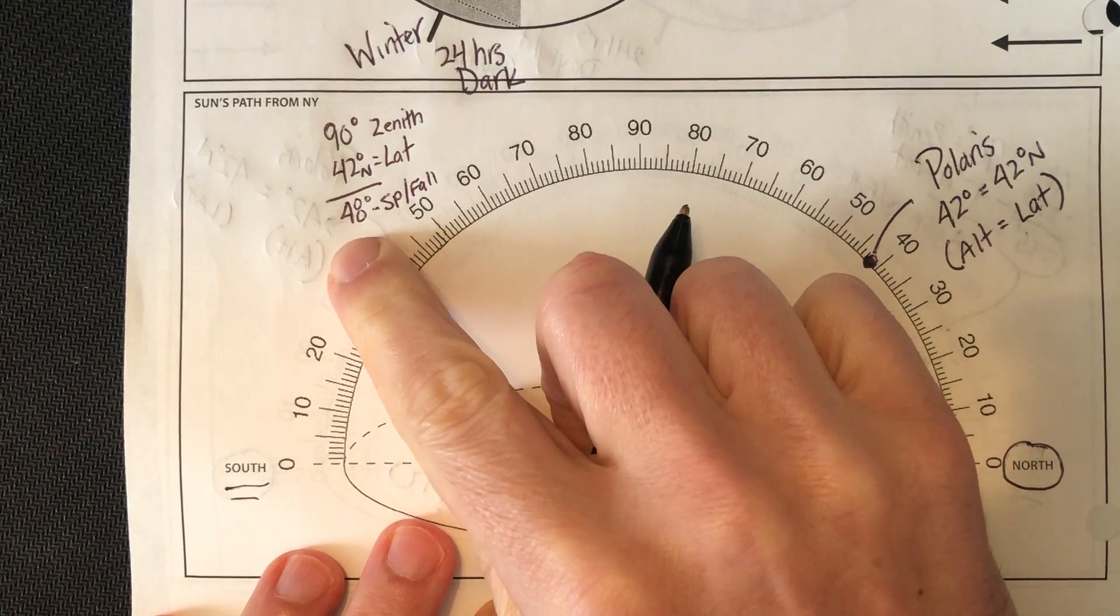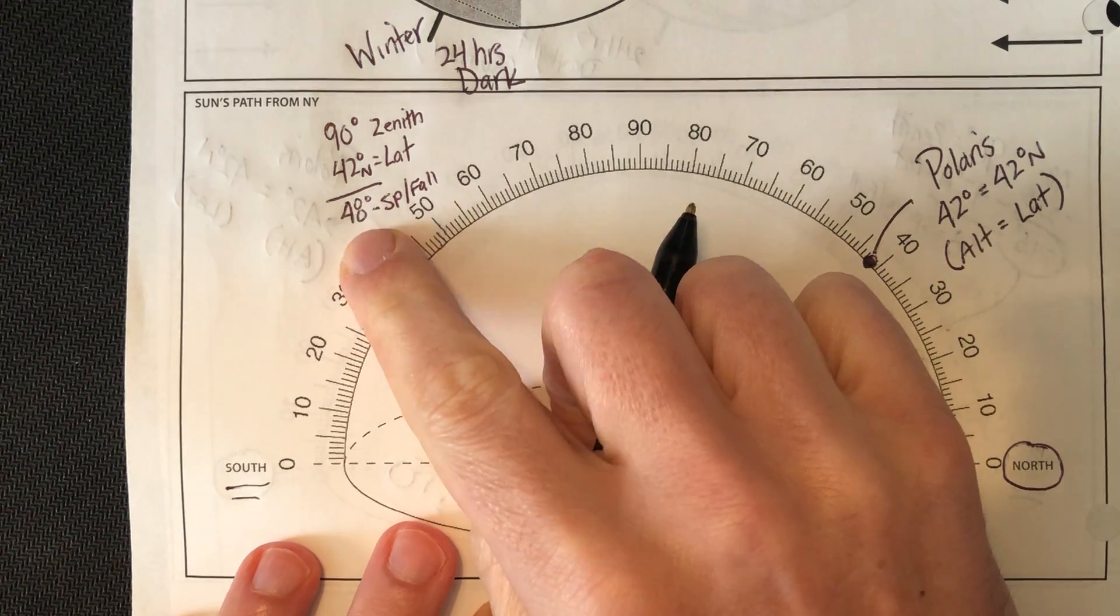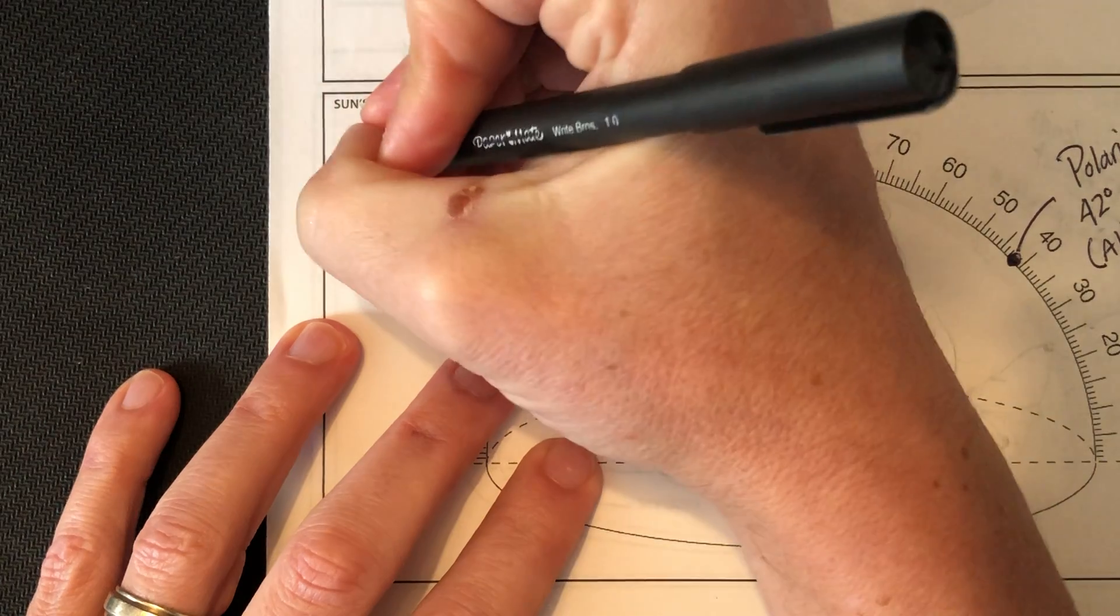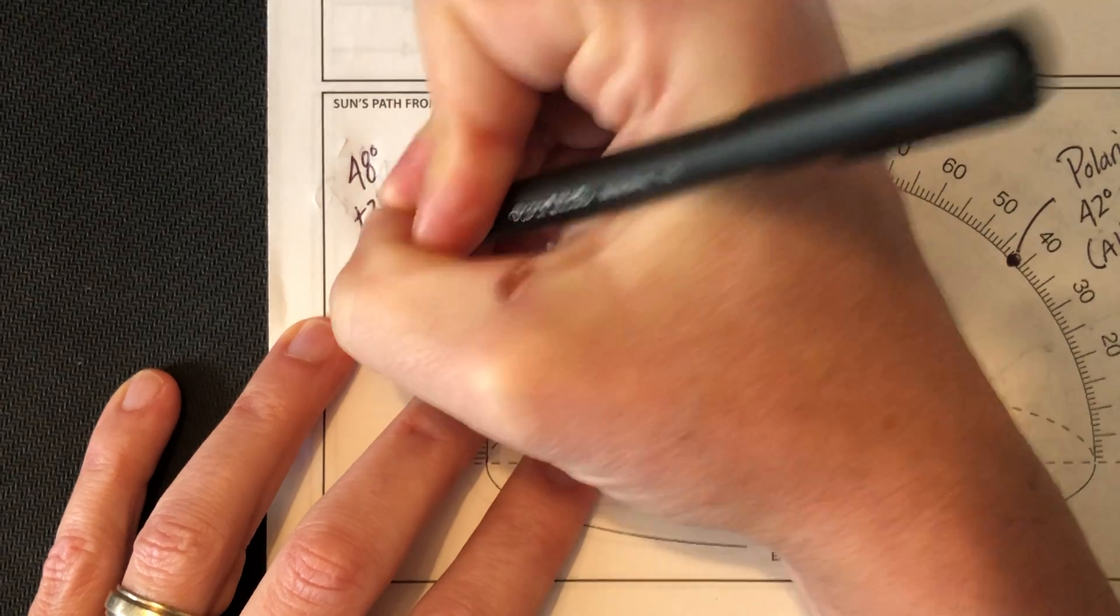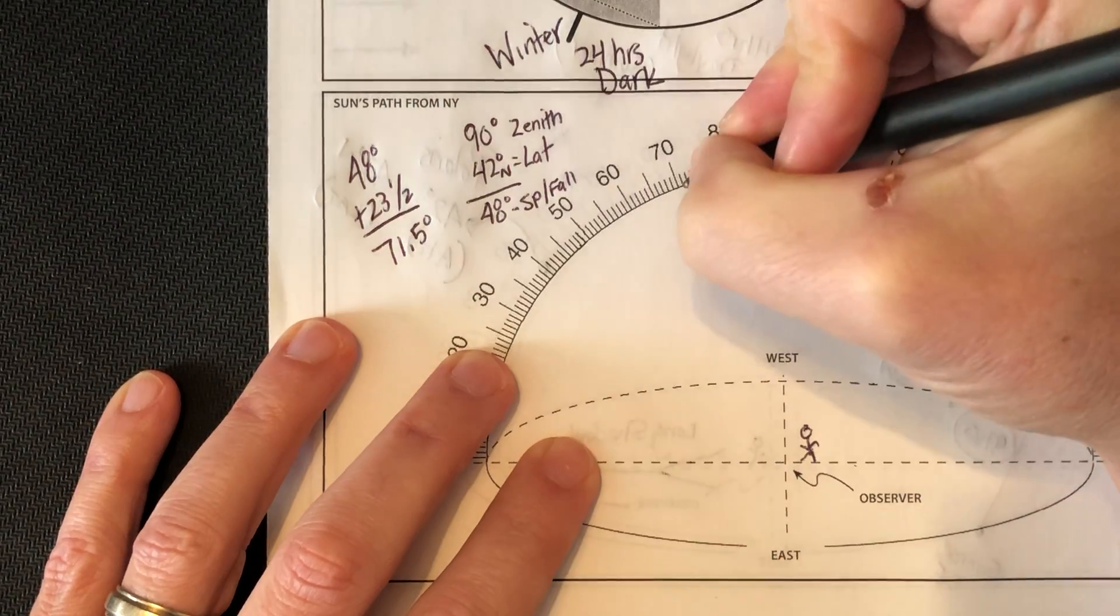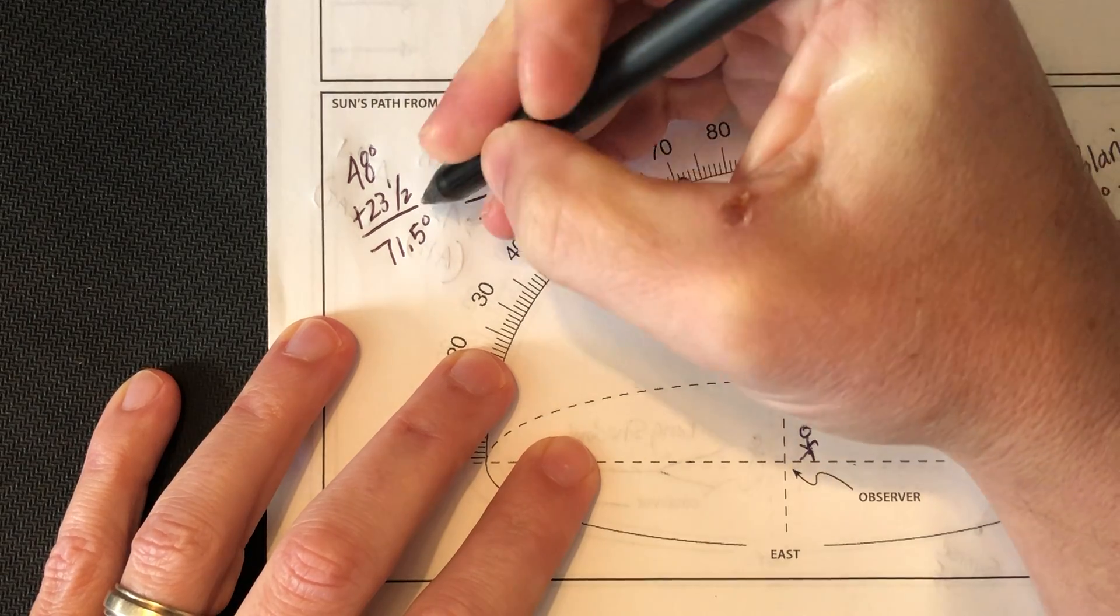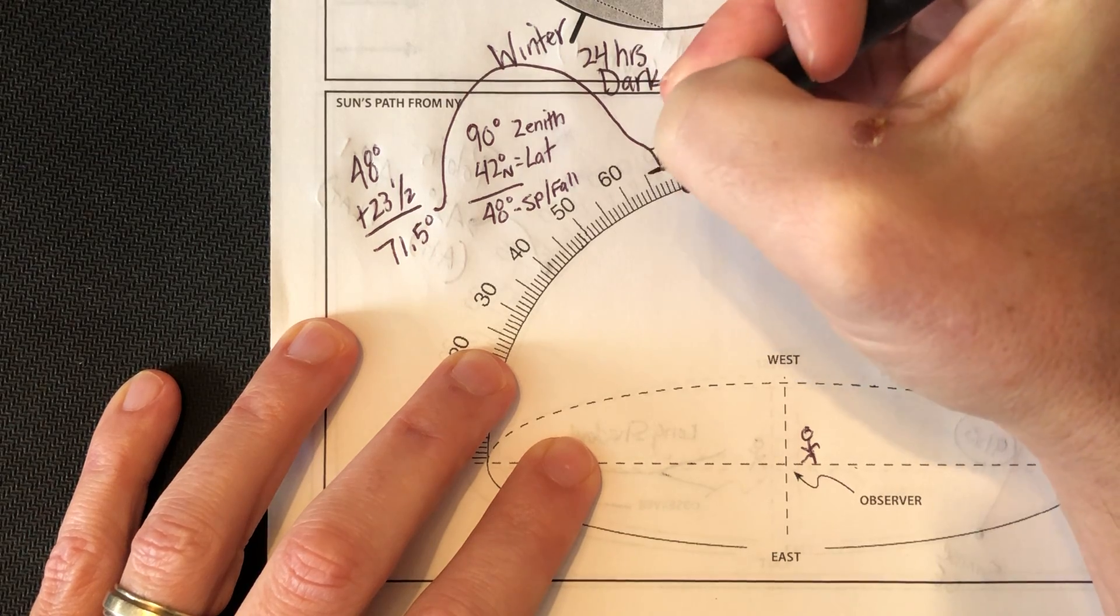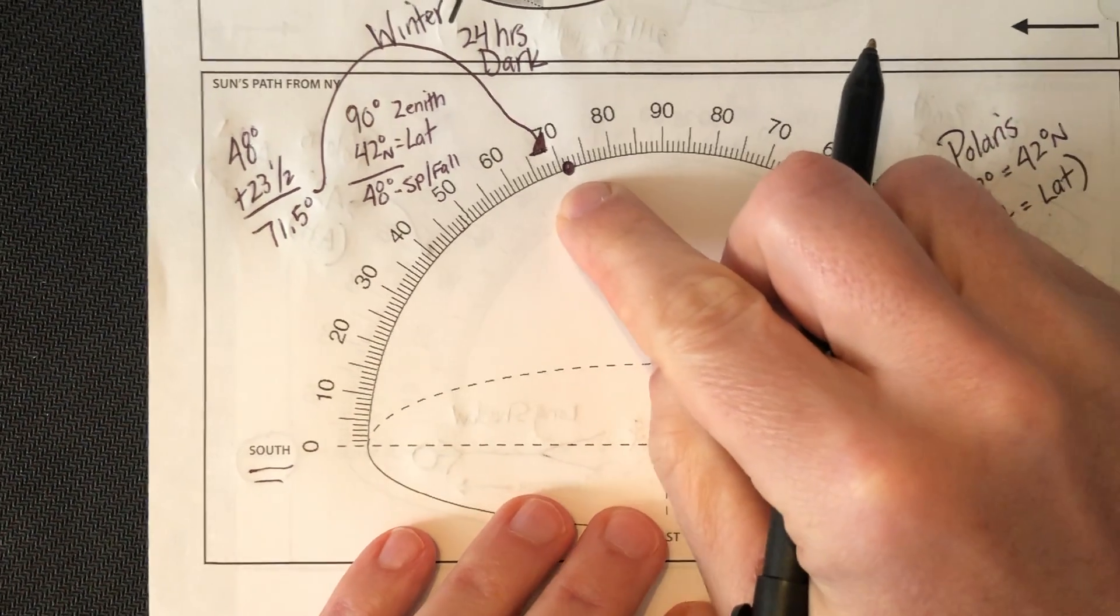Now, in winter, I subtracted the tilt of the axis. For summer, I'm going to add the tilt of the axis. So 48 degrees plus 23.5 is 71.5 degrees. 71.5 degrees is about right there. So that's going to be the altitude of my noon sun in summertime.